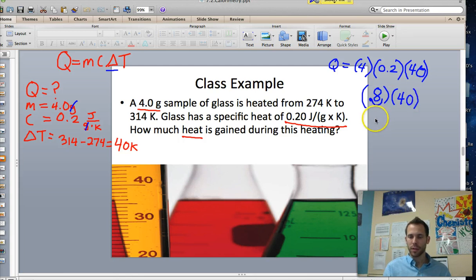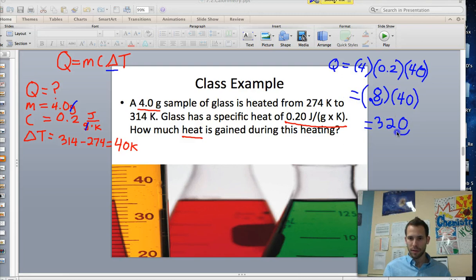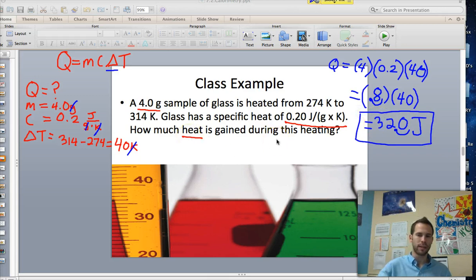I know that 8 times 4 is 32. And we have one zero. But then we also have one decimal. So I'm going to go decimal over one place. And I'm going to get 32. Kelvin cancels out. So I'm going to end up with joules. 32 joules of heat or energy is gained during this heating.